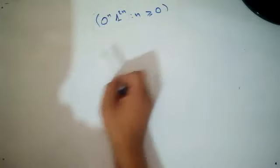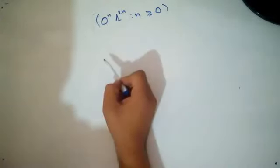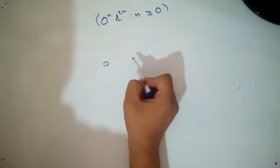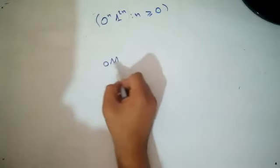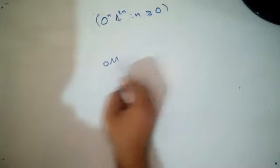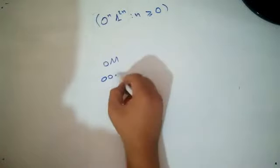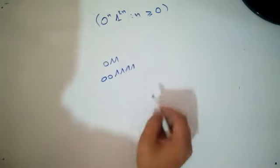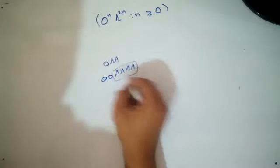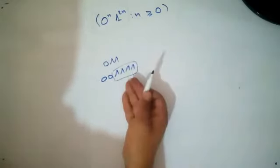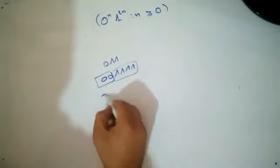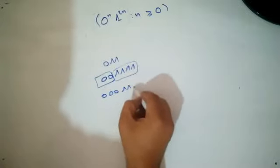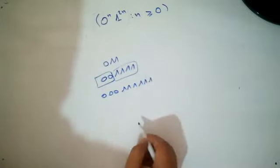What does this language mean? If you have one zero on the left, you must have two ones on the right. If we have two zeros, we must have four ones. So the number of ones on the right side equals two times the number of zeros on the left side. For example, three zeros means we must have six ones.